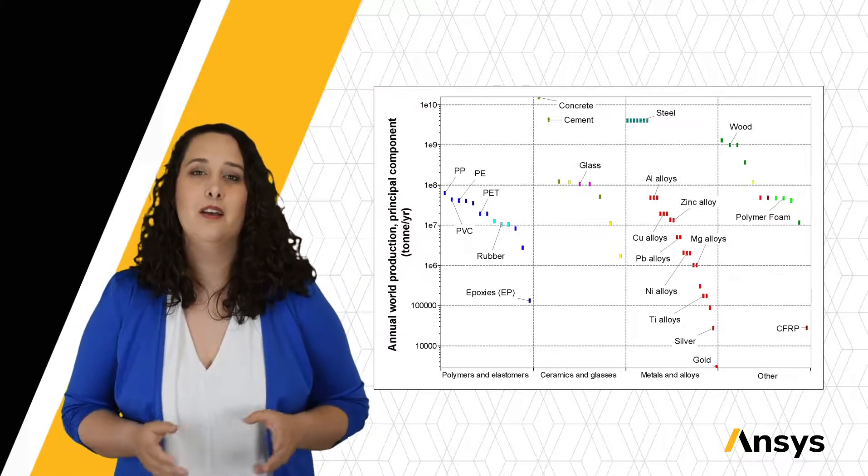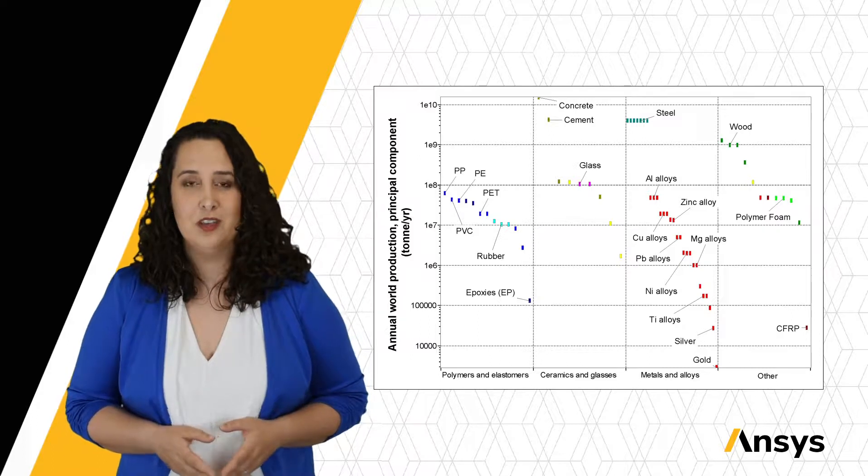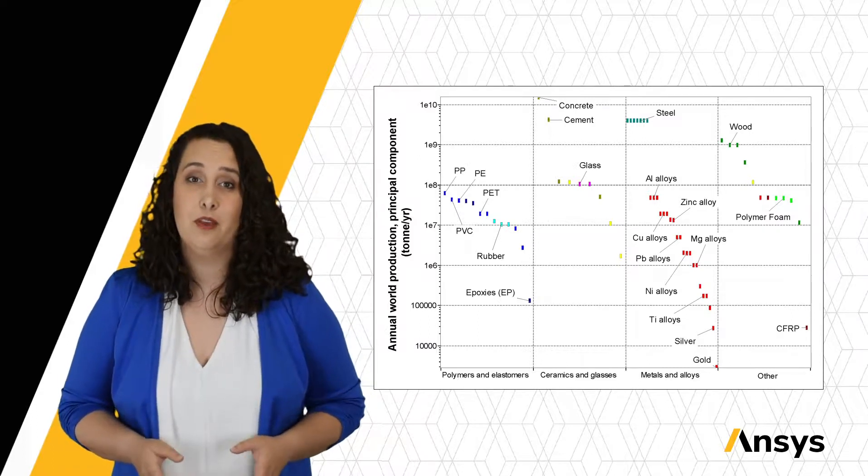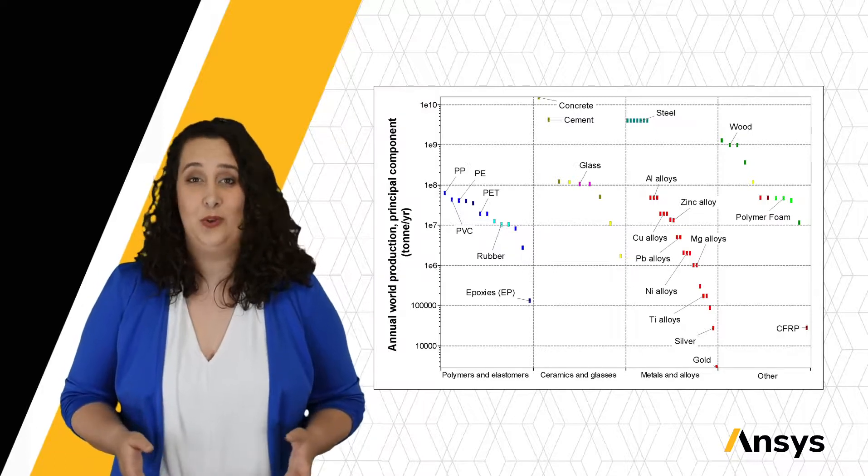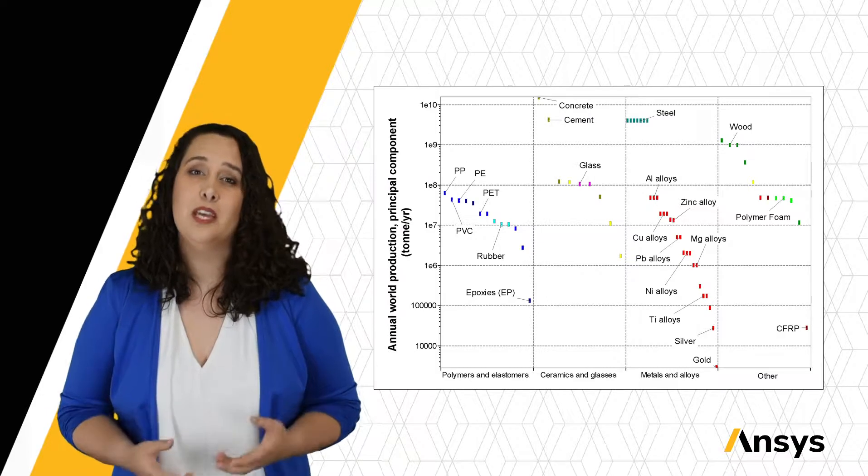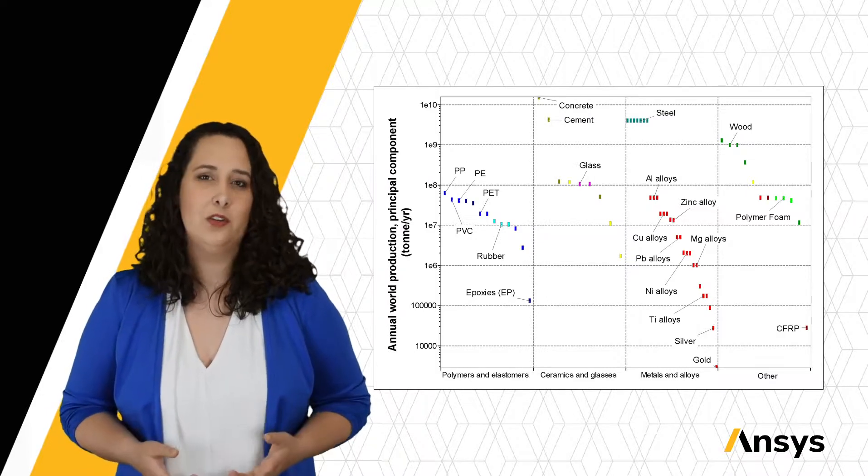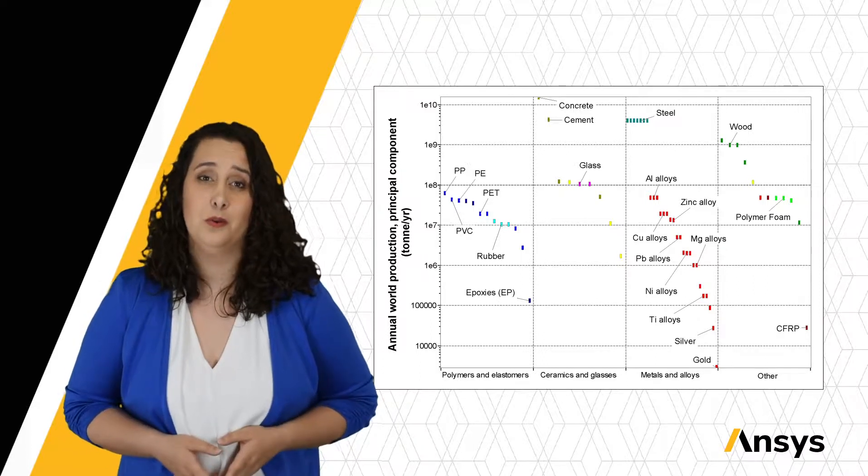You can see here an Ashby plot of the annual world production of materials, split into categories based on material family. We're producing 10 billion tons of materials a year. That's an outrageous number. And it's important to keep this in mind when making decisions during design about where you're going to source your material and the processes you'll use.